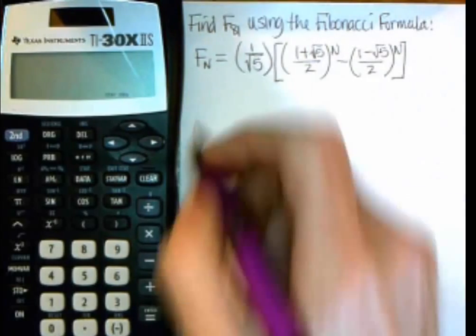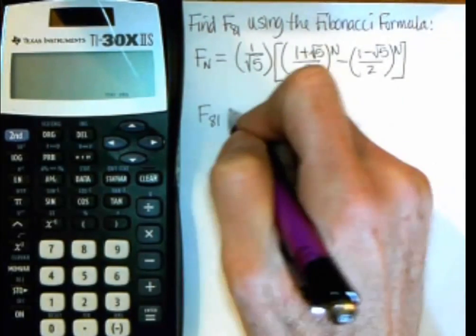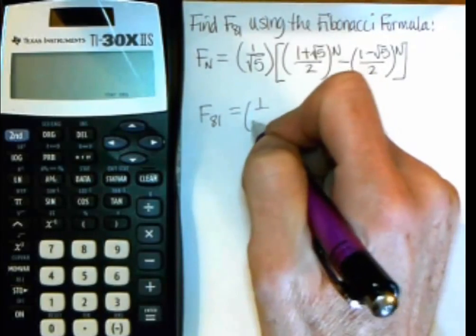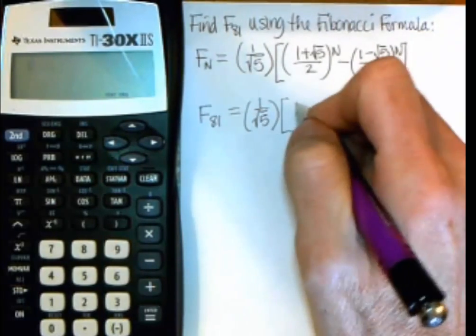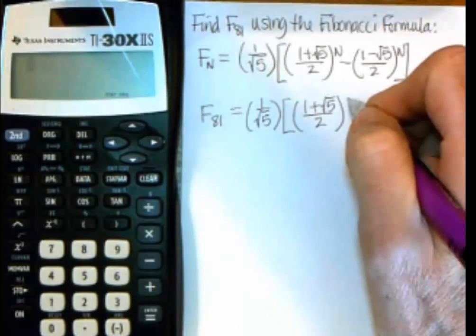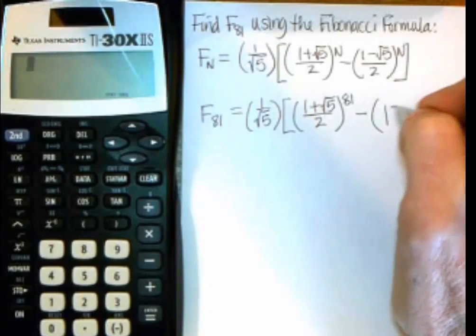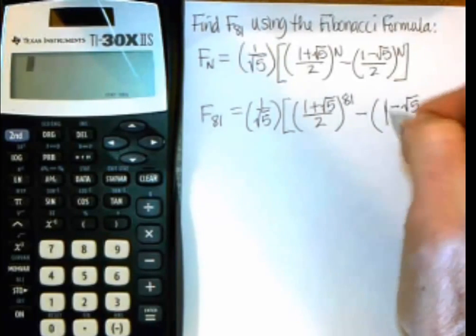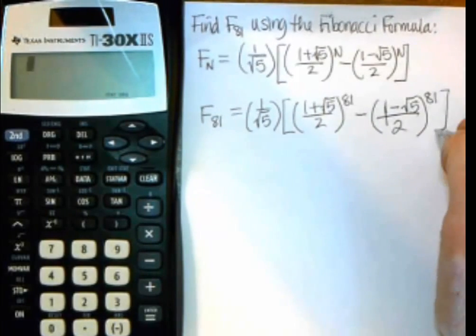Using the Fibonacci formula, I can write it as F sub 81 equals 1 over the square root of 5 times the big quantity: 1 plus the square root of 5 over 2 raised to the 81st, minus 1 minus the square root of 5 over 2 also raised to the 81st power.